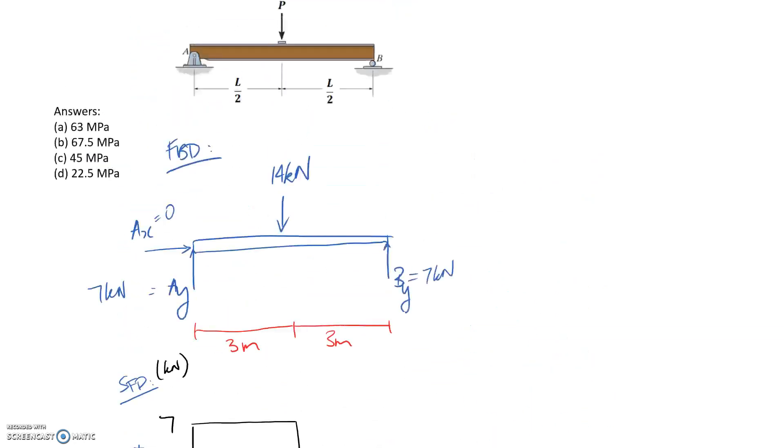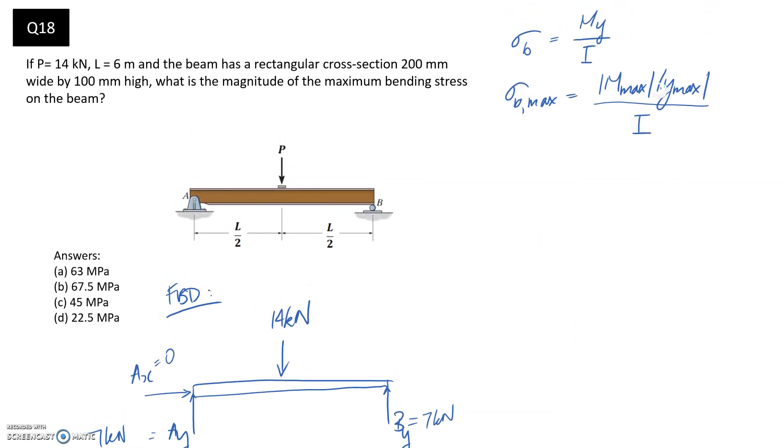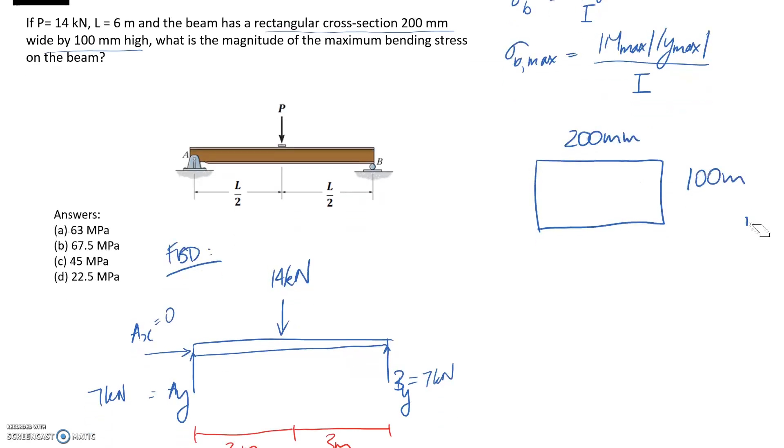So now what we need to focus on is the cross section in order to get the maximum distance from the neutral axis and the I value. So it tells us in here that we have a rectangular cross section, which is 200 millimeters wide by 100 high. So if we draw that, it's going to look something like this, 200 by 100 millimeters. So we know that the neutral axis goes through the centroid of our shape. So it's going to be somewhere here, N, A for neutral axis.